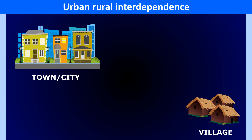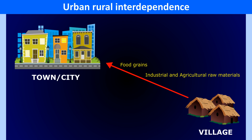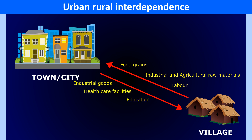Urban-Rural Interdependence. A considerable degree of interdependence exists between urban and rural areas since villages supply food grains, industrial and agricultural raw materials, and labor force to cities and towns. The towns and cities, on the other hand, supply industrial goods, health care facilities, education, and most importantly, employment opportunities for people in rural areas. Therefore, a complementary relationship exists between villages and cities wherein both benefit each other.